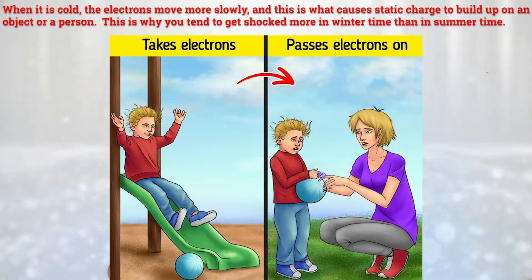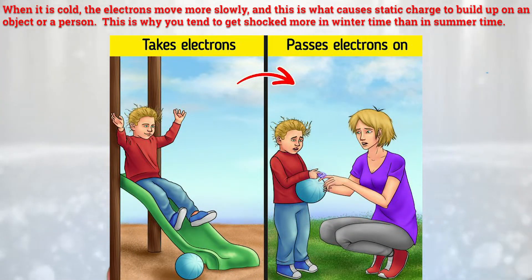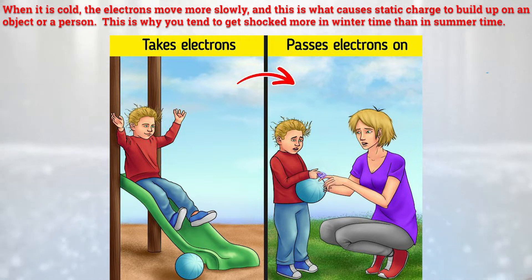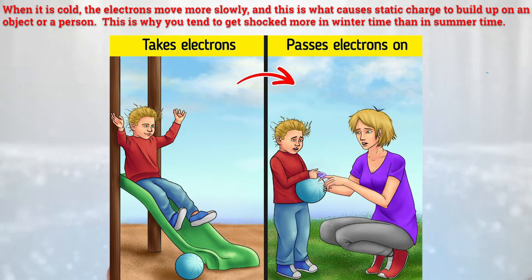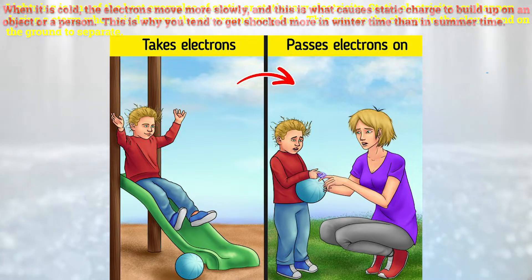When it is cold, the electrons move more slowly, and this is what causes static charge to build up on an object or a person. This is why you tend to get shocked more in wintertime than in the summertime.